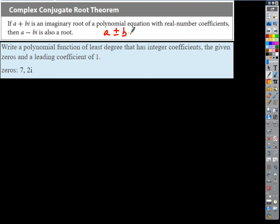So if I get 2i as one of my complex zeros, written as a complex number in standard form, that's zero plus 2i — we just don't write the zero. So what's its complex conjugate? Zero minus 2i, which is negative 2i. That tells us if 2i is a zero of the function, we automatically know that negative 2i is also a zero — they have to go together.